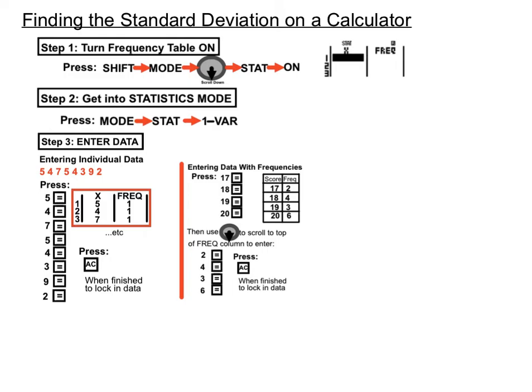Or if we're entering data with frequencies, we'll do a round of entering the scores with the number, then equals, the number, then equals until we're done with that. And then we'll scroll down and across, sorry, down and up to get our cursor up to the top of the frequency column, just to the right of our first score that we entered. And then we'll enter the frequency values in a similar way, clicking the frequency then equals each time until we're done. So when we are done, we'll press AC to lock that data in. So we're either entering individual data or data with frequencies, whichever way you go there, press AC to lock it in.